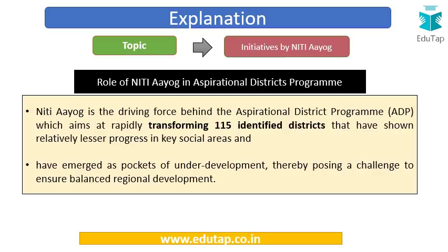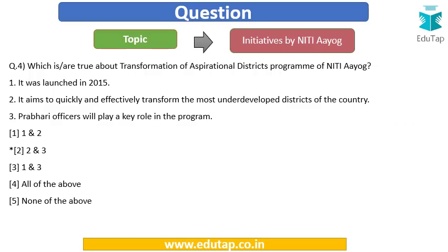NITI Aayog is the driving force behind this aspirational districts program, which aims to transform 115 identified districts that have shown relatively less progress in key social areas and have emerged as pockets of underdevelopment. The goal is to ensure balanced regional development. Statements 2 and 3 are correct; statement 1 is wrong as it was launched in January 2018, not 2015. The answer is option number two.